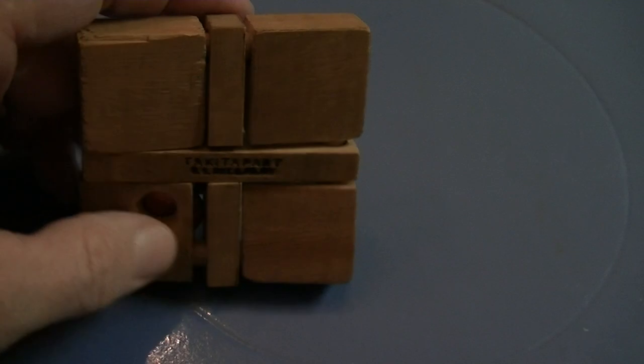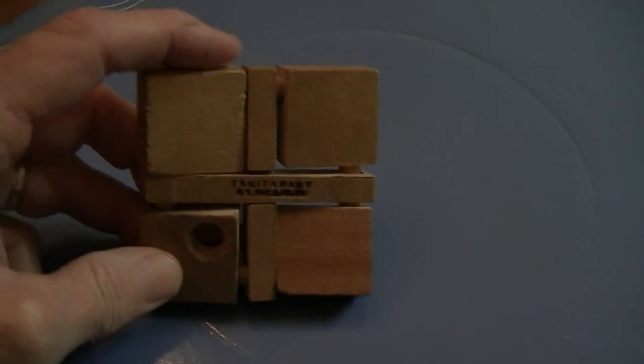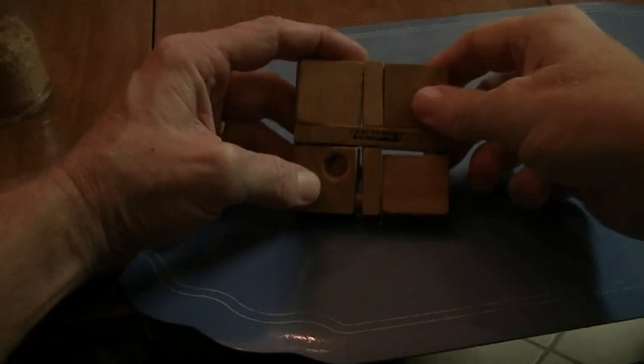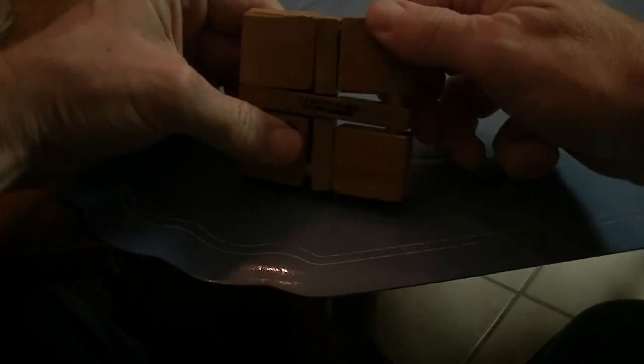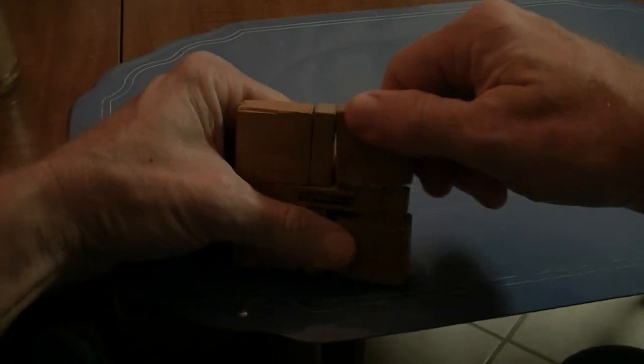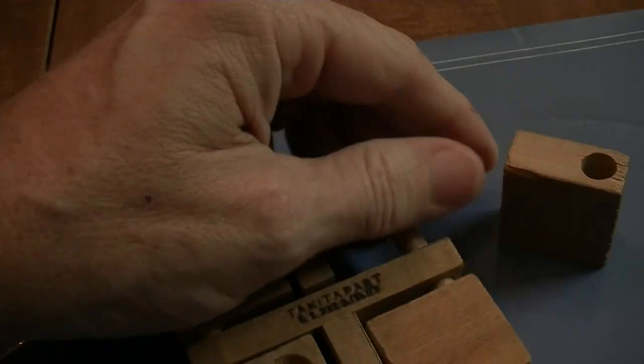To get this thing apart, you have to hit it here to get this dowel to come down. I'm going to see if I can hold this camera. You take this and you have to keep working it, and you twist it just like that. You'll see that dowel comes out.